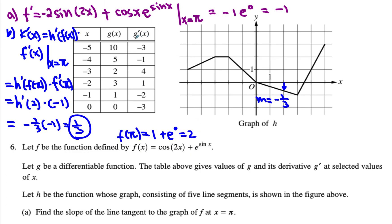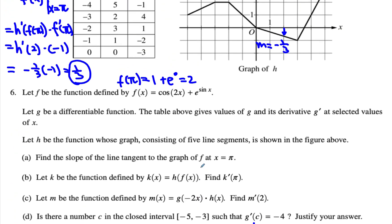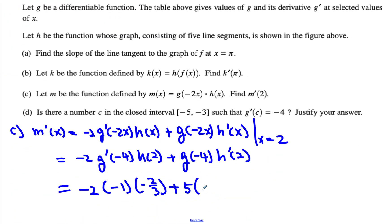Plus g of negative four, g of negative four is five here. And then h prime of two, and then h prime of two we figured it out as negative one third earlier. And when you combine them together, we get negative four thirds minus five over three, what we end up getting is negative three. All righty.